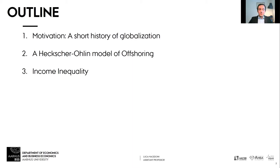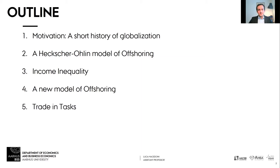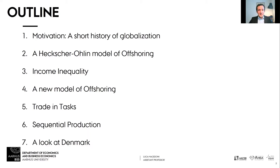We're going to see that that model is not going to do very well empirically — it's going to fail to replicate certain patterns in rising income inequality across countries. For such reason, we're going to need a new model: that's going to be the model by Feenstra and Hanson. That's going to help us understand how offshoring can partially account for the increasing income inequality in the US and in Mexico. Then we'll study the trading tasks model by Grossman and Rossi-Hansberg, and finish with a description of a sequential production model and a look at a study of offshoring in Denmark.